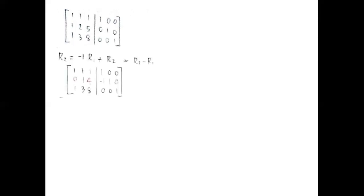To get the second row we subtract R sub 2 minus R sub 1. The first and third rows are retained as (1,1,1 | 1,0,0) and (1,3,8 | 0,0,1). The result of the operation in the second row becomes (0,1,−1 | −1,1,0). To get the third row we subtract R sub 3 minus R sub 1. The first and second rows are retained as (1,1,1 | 1,0,0) and (0,1,4 | −1,1,0), giving result (0,2,7 | −1,0,1).